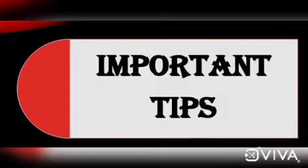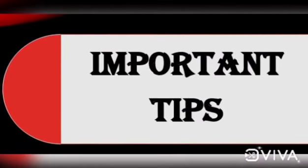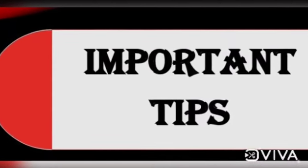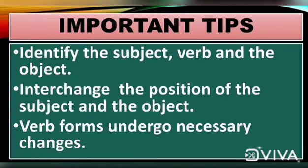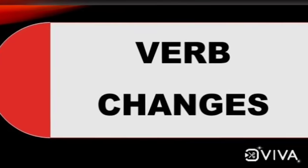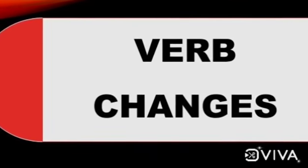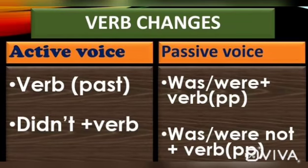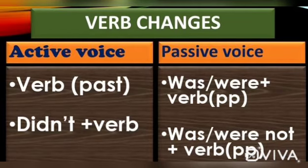Here are some tips. As usual, we should identify the subject, verb, and object. Subject and object should be interchanged, and then the verb form should be used appropriately. When the verb is in past form, the helping verbs 'was' and 'were' should be used. For a singular subject, 'was' should be used, and for a plural subject, 'were' should be used.